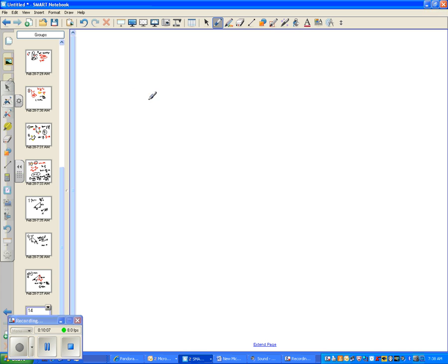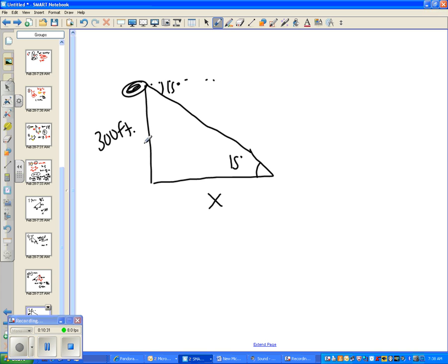Number 12, an eagle is 300 feet in the air, spots its prey. The angle of depression, that's important, angle of depression is 15 degrees. Here's its prey. You want to know how far away is the eagle from its prey. There's my eagle. If this is 15 degrees, you could say that this is 15 degrees. And then we can set up our trig ratio.